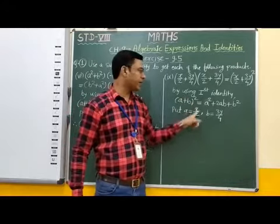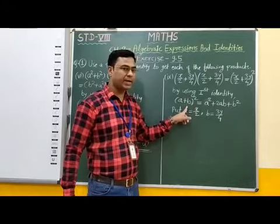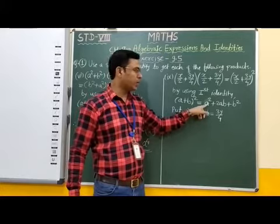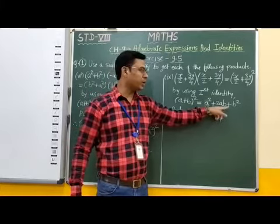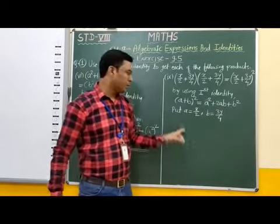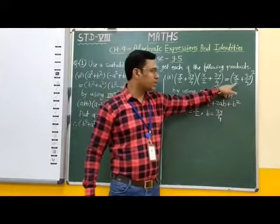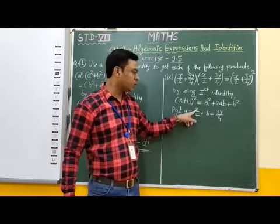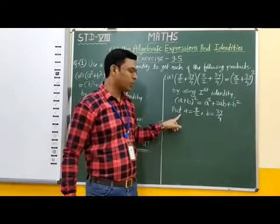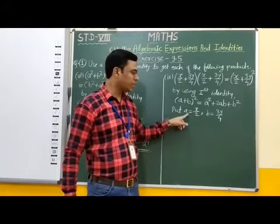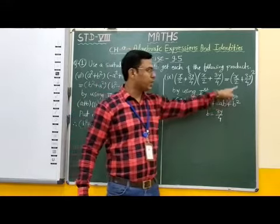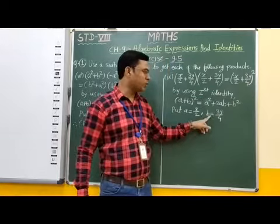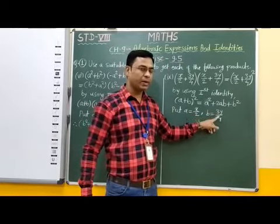By using the first identity — the first identity is: a plus b whole bracket squared is equal to a square plus 2ab plus b square. Here, the first term is x by 2, therefore a is equal to x by 2. The second term is 3y by 4, therefore b is equal to 3y by 4.